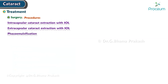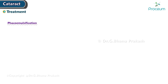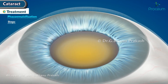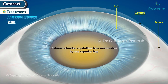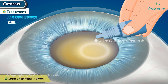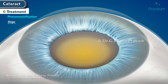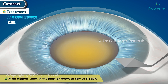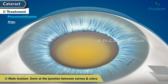Phacoemulsification is a stitchless surgery that minimizes chances of post-operative astigmatism. Prior to surgery, local anesthesia is given. A main incision of about 2 mm is made at the junction between the cornea and sclera, through which the intraocular lens will be inserted. One or two additional microincisions are made to enable manipulation with surgical instruments.